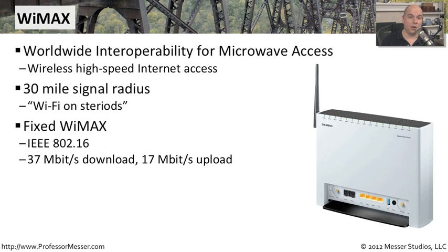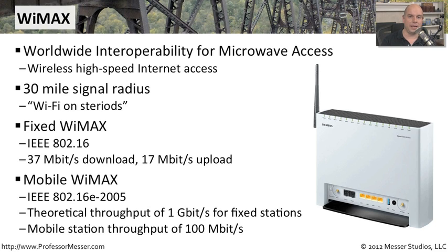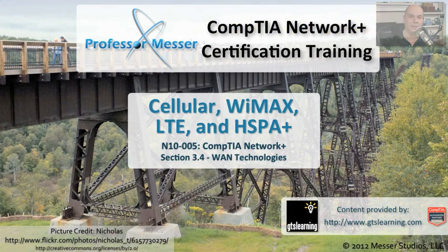There's another type called mobile WiMAX, the newer flavor of WiMAX. It is also 802.16 — specifically 802.16e, updated in 2005. Because this is the newer WiMAX, it is also the faster WiMAX. You can get download speeds of a theoretical throughput of up to one gigabit per second if you're a fixed station, and if you're a mobile device, throughputs of up to 100 megabits per second. So if you have an area with a lot of WiMAX connectivity, you're really competing with traditional mobile technologies like LTE and HSPA+.